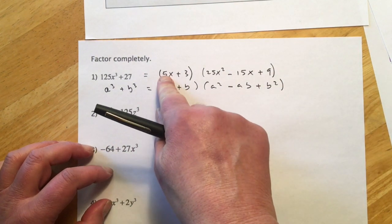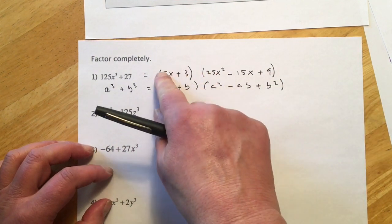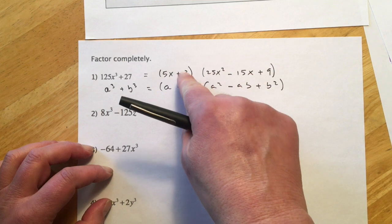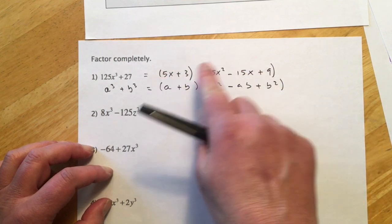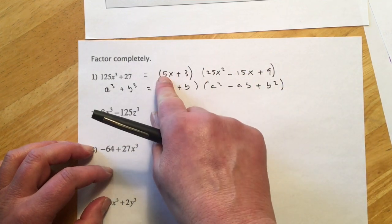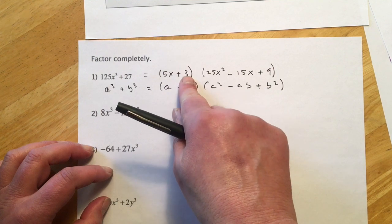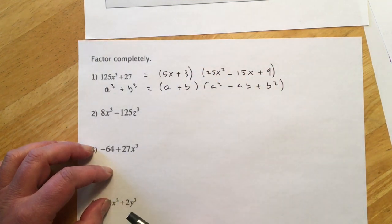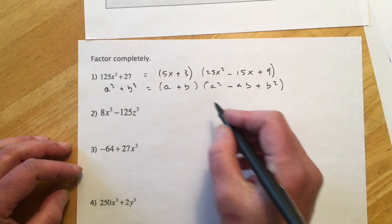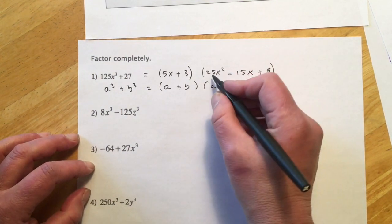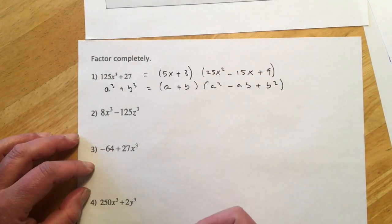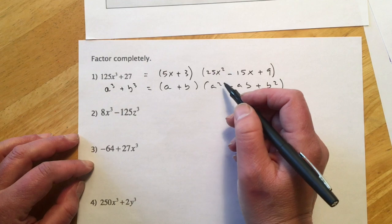So one more time, I go 5x times 5x, 25x², 5 times 3, 15x, 3 times 3, 9. So I just kind of think of it as that pattern, square this, multiply them together, square this. And that's how you fill in the second piece. And again, you could write out the formula and plug this stuff in and get to the exact same spot, but that, for me, was easier to memorize.